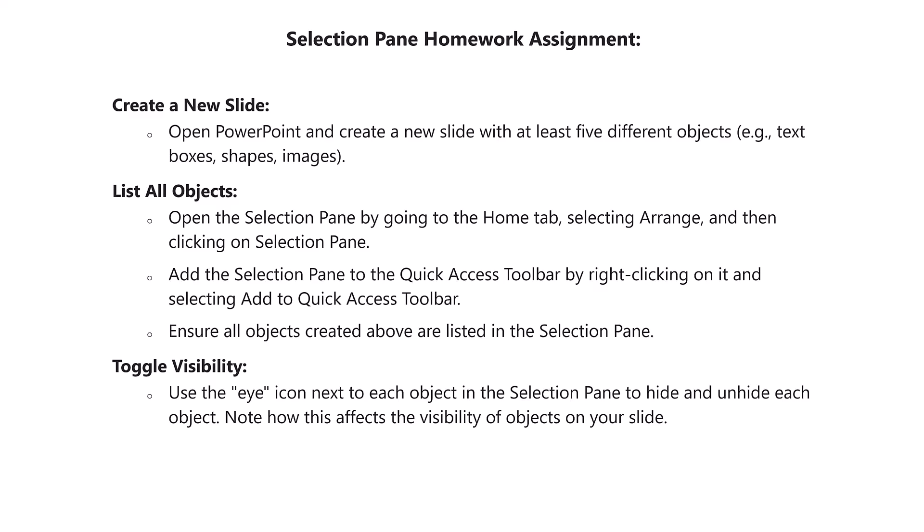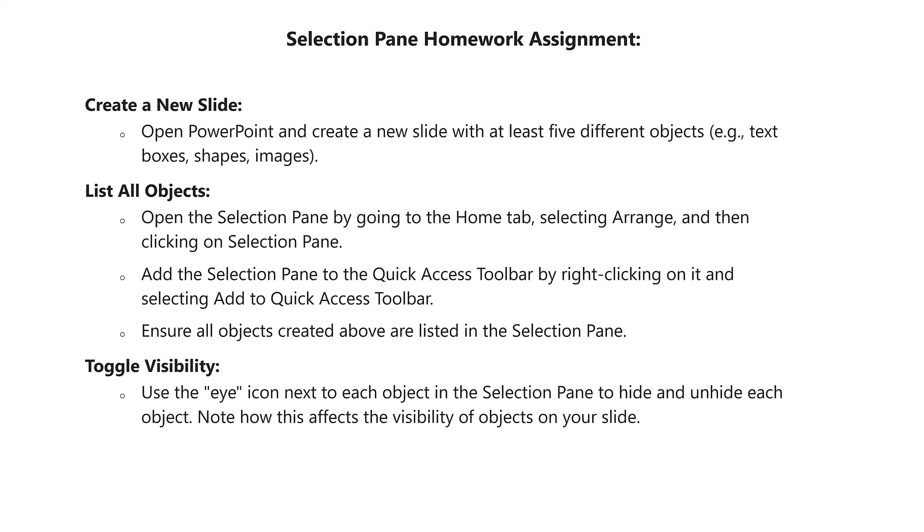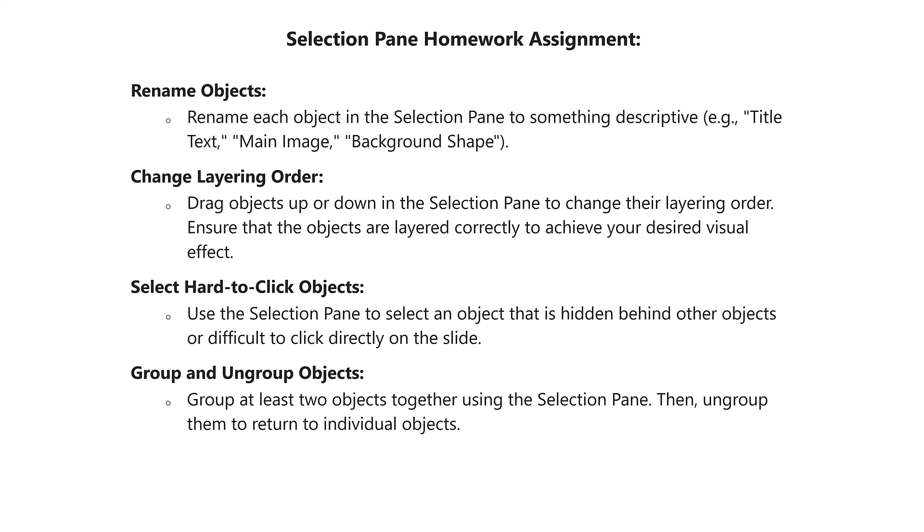Seeing all these features in action is great, but more importantly you need to put this into action yourself. So let's take a look at the short homework assignment. You're going to create a slide with a series of objects and work through how to manipulate them: add the Selection Pane to your Quick Access Toolbar, toggle visibility on and off, rename objects, change up the layering order, select hard-to-click objects directly from the Selection Pane, and work with grouping and ungrouping.